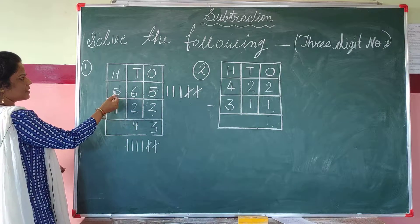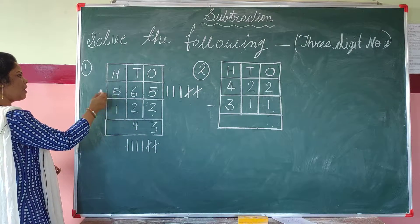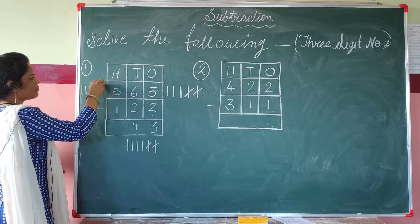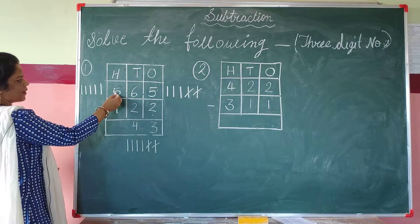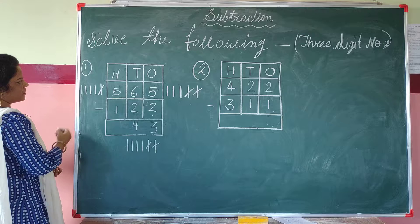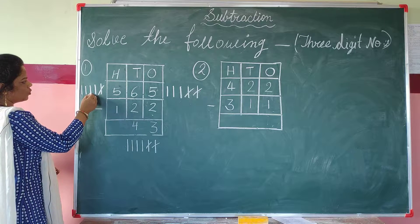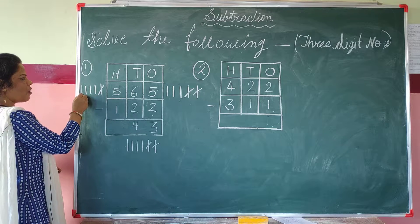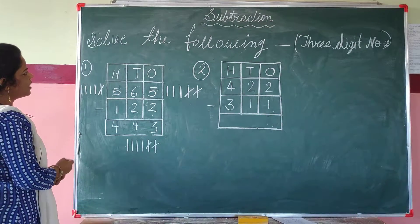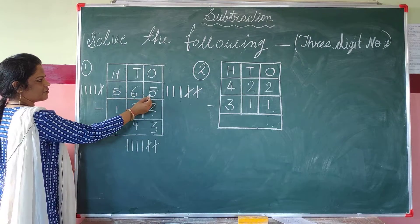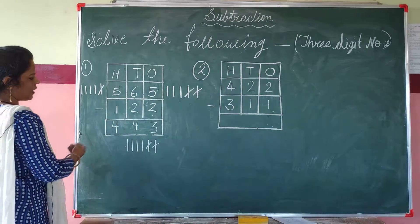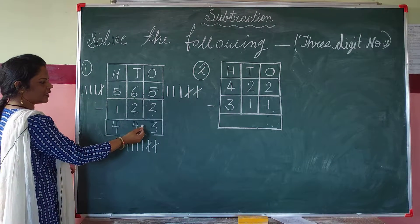Now this is number 5 at the hundredth place. We draw 5 lines: 1, 2, 3, 4, 5. 5 minus 1 — we cut 1 line. How many lines are left? 1, 2, 3, 4. We write 4 at the hundredth place. Children, when we subtracted 122 from 565, our answer is 443.